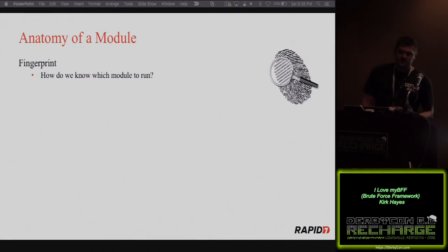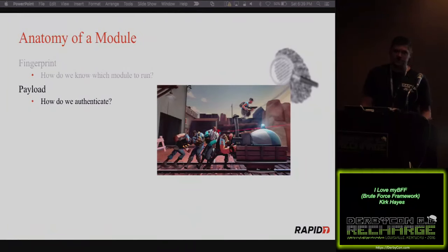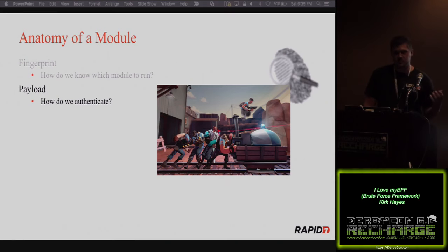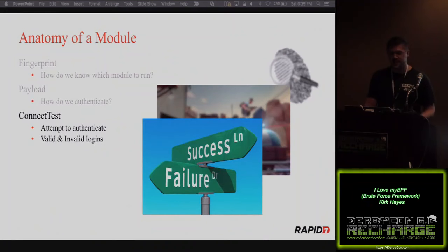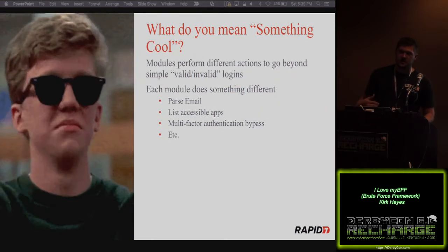Each module has a few different parts. First is a fingerprint — I need to know which module to run, so I look at the results from the initial request, look for a certain string, a cookie value, something that differentiates that application from another. Next, I build my payload — how do we authenticate? That's the username and password. Sometimes you'll see 'j_username', sometimes 'username', sometimes 'user' — whatever the web developer decided to name things, we build that payload to authenticate properly. Then we actually try to connect, which is what every script out there does — it tells you if it's valid or invalid.